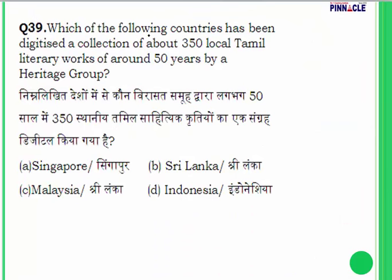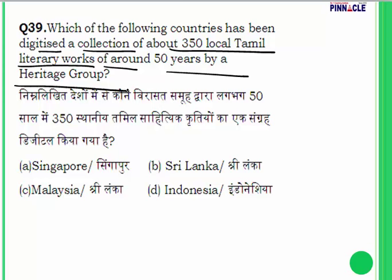Question 39 is a current events question: which country has digitized a collection of about 300 local Tamil literary works of around 50 years by a heritage group? Answer: Singapore.